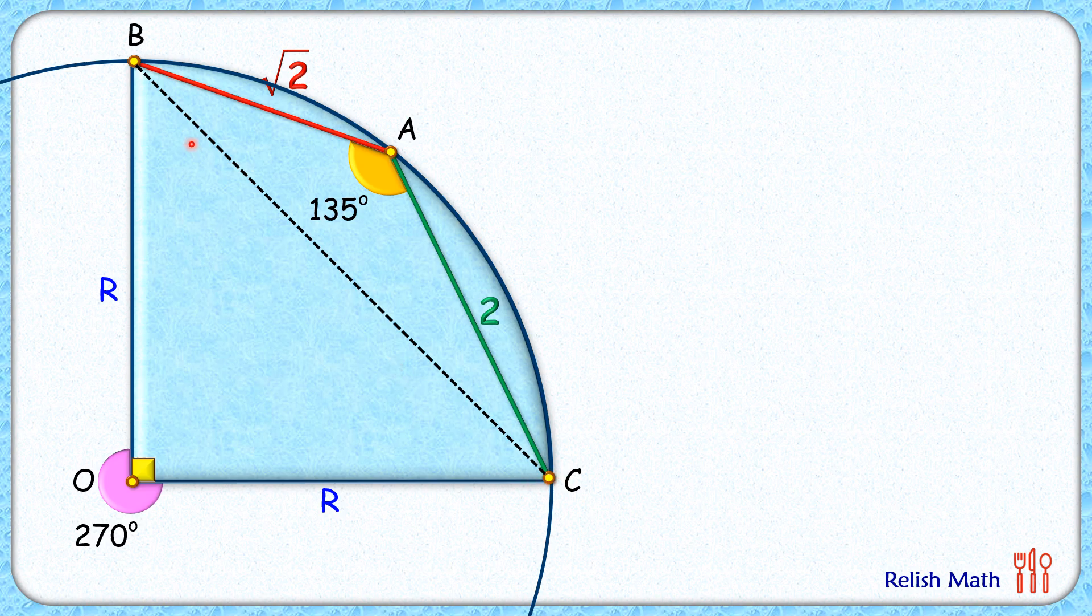Applying Pythagoras theorem, we will get hypotenuse BC as root 2 R. Let's check the triangle BAC. Here in this triangle let's apply cosine law.